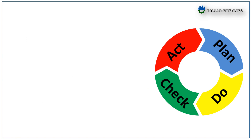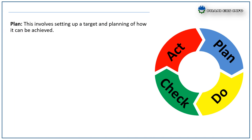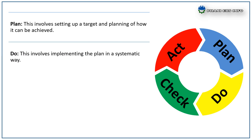In the PDCA cycle, P means Plan. This step involves setting up targets and planning how they can be achieved. D means Do. This step involves implementing the plan in a systematic way.